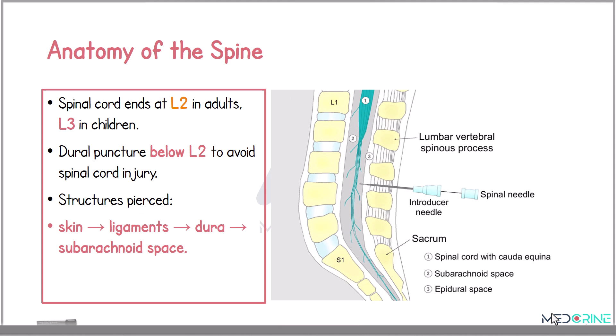When looking at the anatomy of the spine, in adults the spinal cord ends at the second lumbar vertebral level and in children it ends at the L3 level. To avoid cord injury, a dural puncture is always performed below these levels, typically between the third and fourth lumbar vertebra or the fourth and fifth lumbar vertebra.